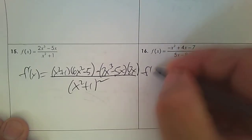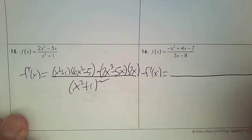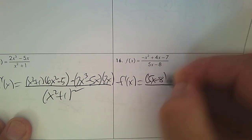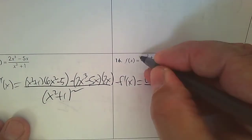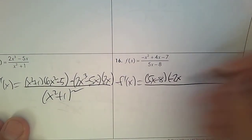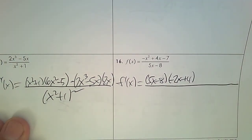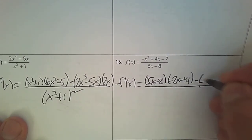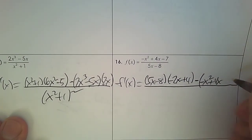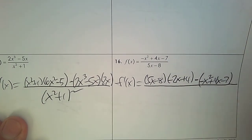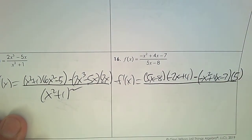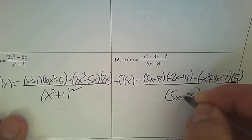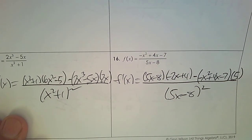Again, the derivative here — big healthy fraction line. Last one: the bottom times the derivative of the top. 2 times negative 1 is negative 2x, plus 4. Negative 7 is 0. Subtract the first: negative x squared plus 4x minus 7. And then the derivative of the bottom is just 5 — that's the slope of that line. Then 5x subtract 8, you square it, and that finishes the quotient rule.